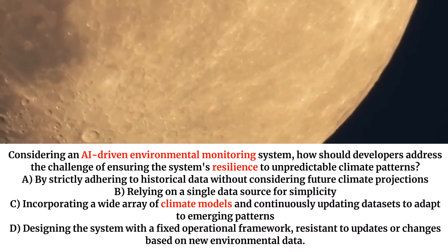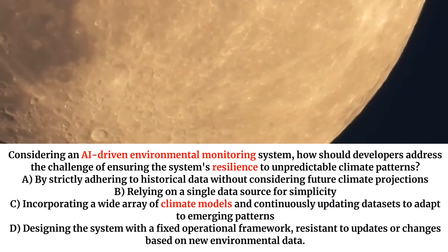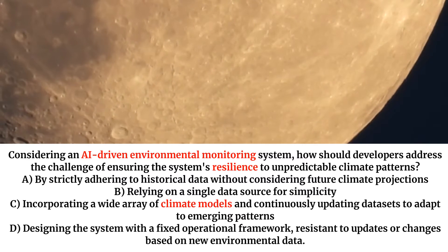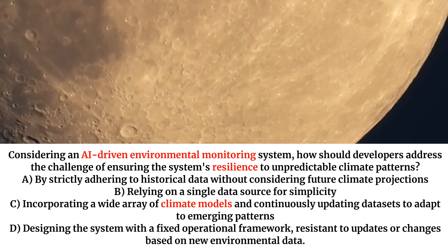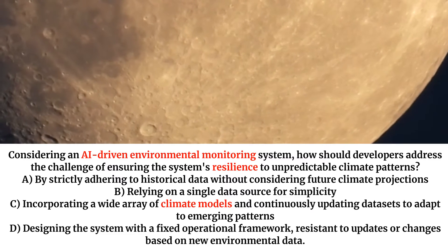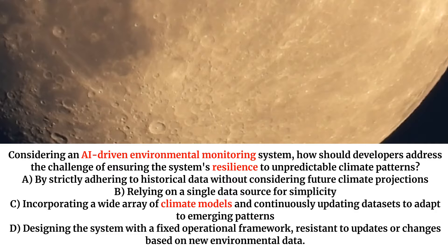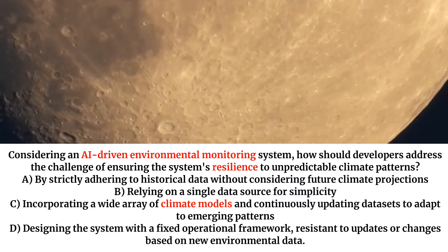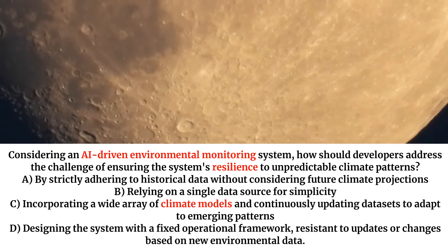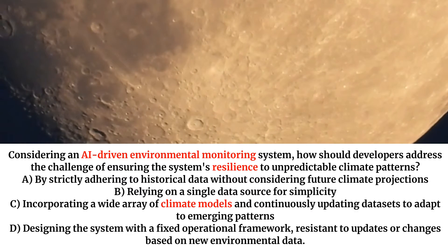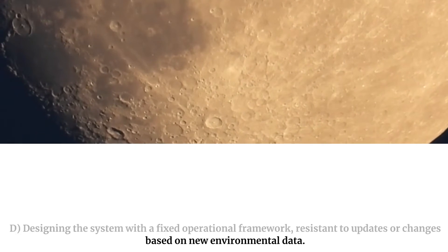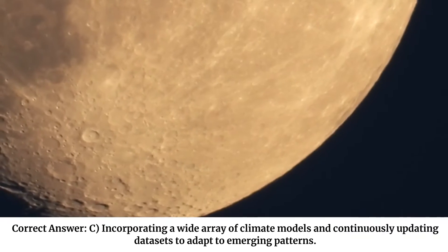Considering an AI-driven environmental monitoring system, how should developers address the challenge of ensuring the system's resilience to unpredictable climate patterns? A. By strictly adhering to historical data without considering future climate projections. B. Relying on a single data source for simplicity. C. Incorporating a wide array of climate models and continuously updating datasets to adapt to emerging patterns. D. Designing the system with a fixed operational framework, resistant to updates or changes based on new environmental data.